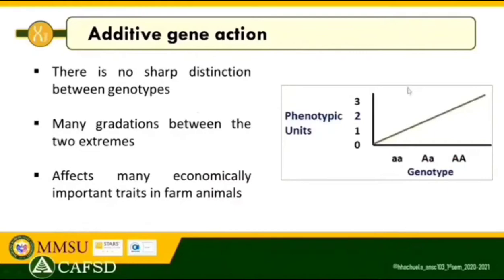For further illustration, we have here a graph showing three genotypes: homozygous dominant, heterozygous, and homozygous recessive, with phenotypic units of three, two, and one respectively. Note that there is no sharp distinction between genotypes, but many gradations exist between the two extremes. As you can see in the graph, an additive genetic effect is the linear combination of the individual genetic effects — that is why it is called additive gene action.